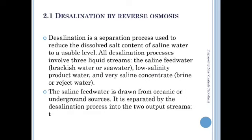Desalination processes involve three liquid streams: the saline feed water, which is brackish water or sea water; the low-salinity product water; and the very saline concentrated brine or reject water. The saline feed water is drawn or obtained from the oceans or underground sources.